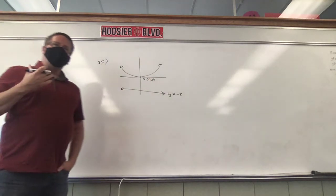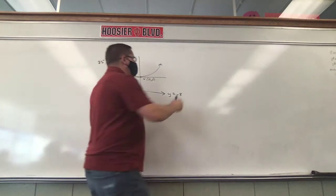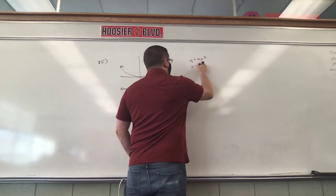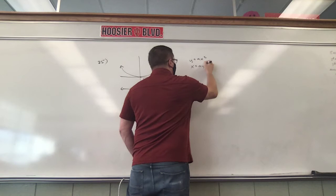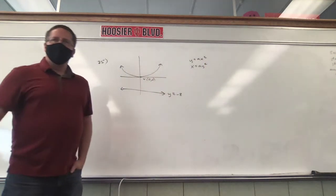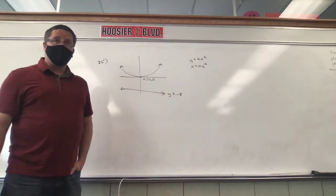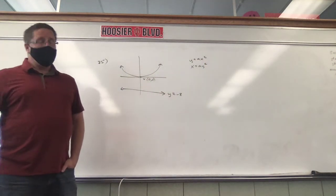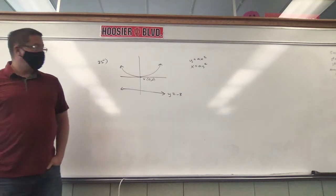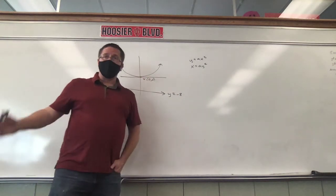So is this going to be y equals ax squared, or is it going to be x equals ay squared? Just think about it — as soon as you say the letter y, y refers to up and down. The y-axis runs up and down. When they say x, that refers to back and forth.